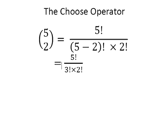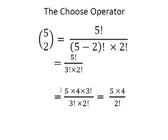We simplify using the earlier remark: 5 factorial equals 5 times 4 times 3 factorial. So the 3 factorial in the numerator and denominator cancel each other out, leaving us with 5 times 4 divided by 2 factorial. Since 2 factorial is 2 times 1, which equals 2, the answer is ten.